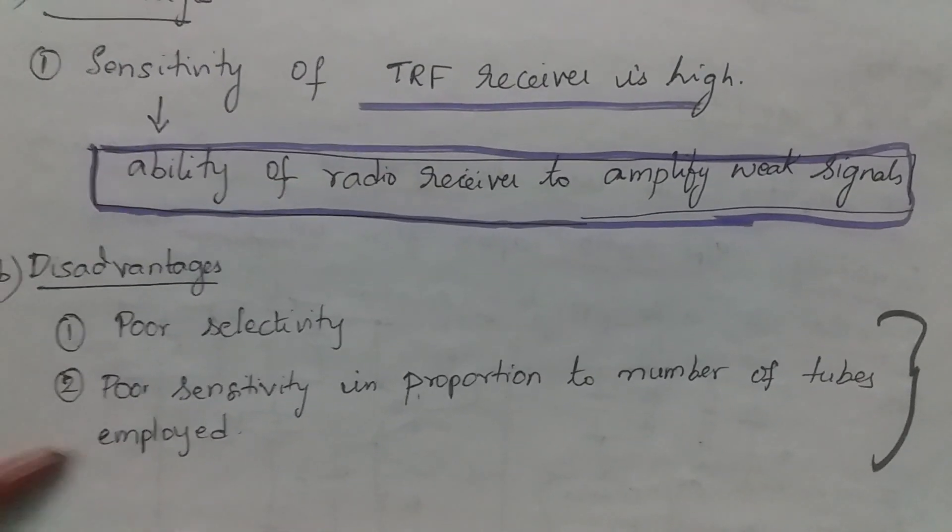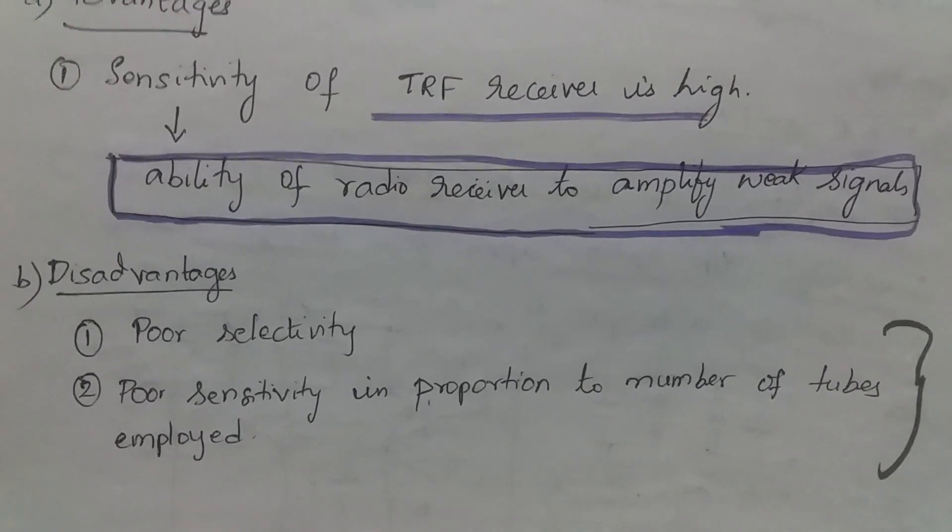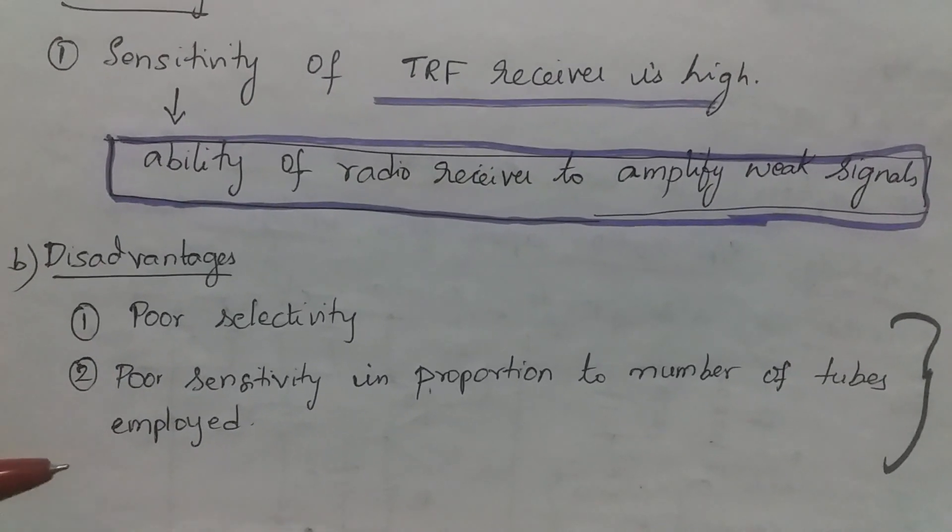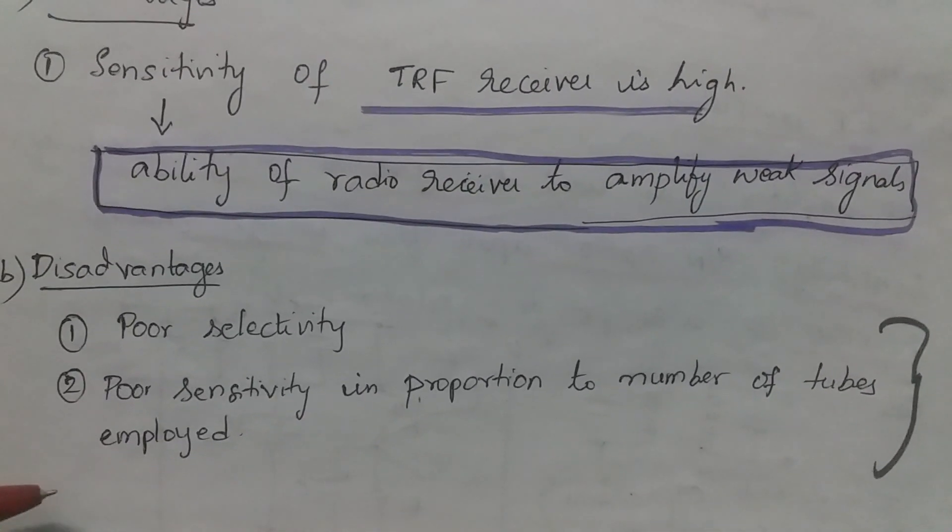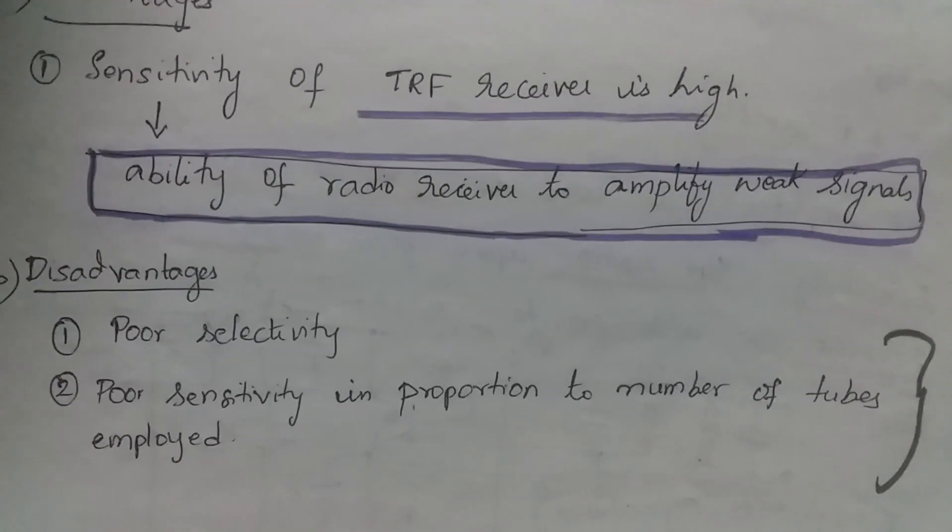But the disadvantage is poor selectivity and poor sensitivity in proportion to number of tubes employed. Combinedly, the total number of tubes gives high sensitivity. You are achieving sensitivity by having number of tubes. But individually, if you have less number of tubes, the sensitivity is poor.